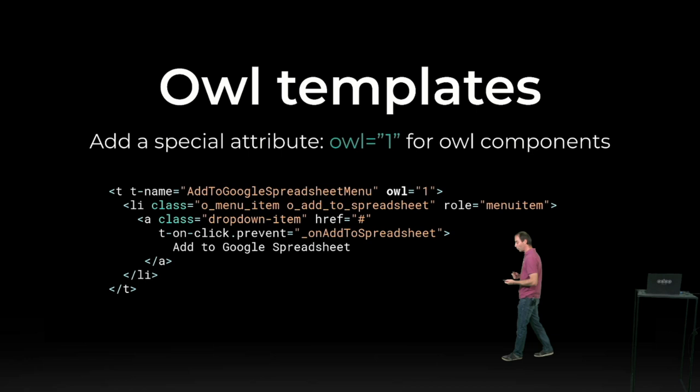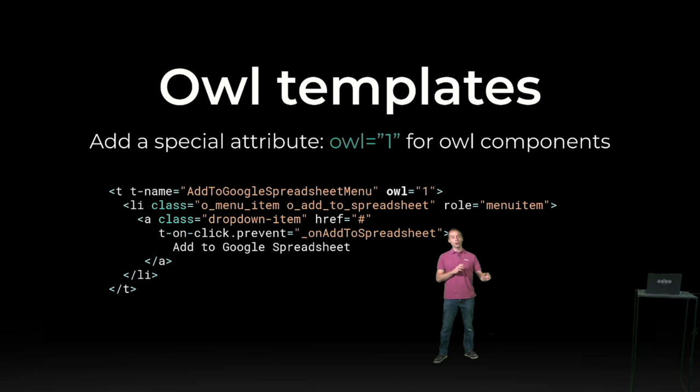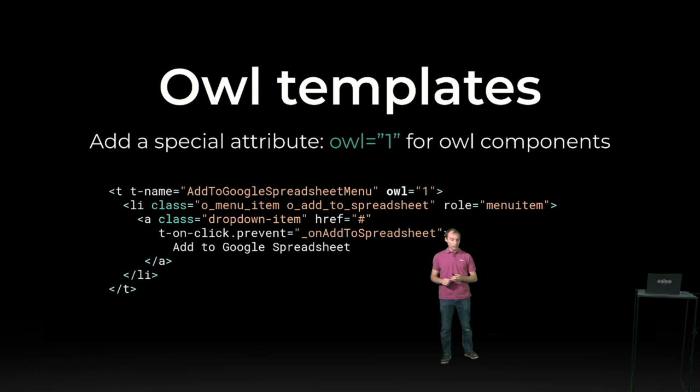Now let's solve the template problem. A template needs to be dispatched to either the old QWeb legacy system or the new OWL QWeb rendering engine. The solution is very simple: just add an attribute 'owl equals 1' or any value. The point is that whenever the web client sees that attribute, it will know the template should be used for the OWL system. If your template does not show up in OWL, make sure you have properly applied this attribute.